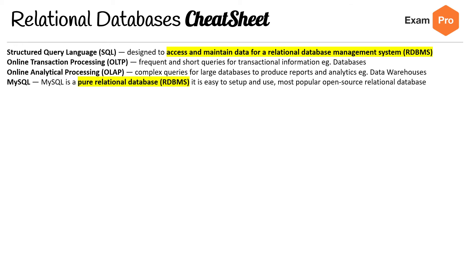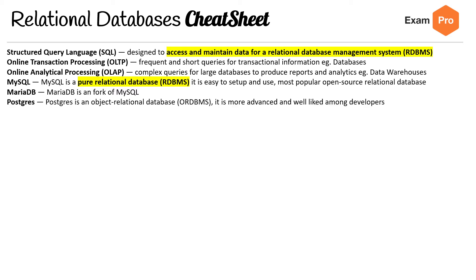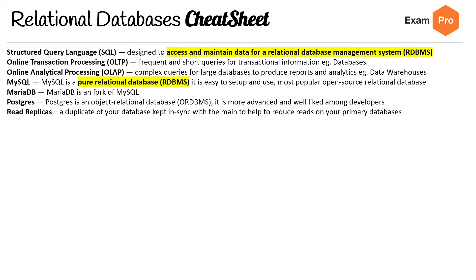On to the open source relational databases: we have MySQL, a pure relational database, easy to set up, most popular open source relational database — definitely something I started off with. MariaDB is a fork of MySQL. Postgres is an object-relational database, my favorite relational database to use, more advanced and well liked among developers. Read replicas is a duplicate of your database in sync with the main to help reduce reads on your primary database.